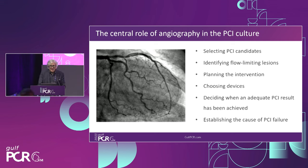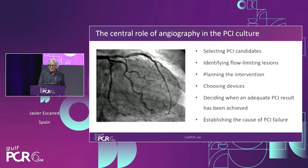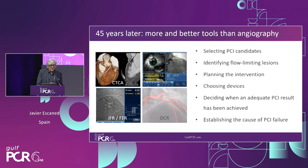To start with, it's important to remember that angiography still plays the same key central role that it played at the time of Andreas Grunzig performing PCI. We use it to select PCI candidates, identify flow-limiting lesions, plan the intervention, choose the devices, decide when we have achieved a good result, and to establish the cause of PCI failure. It's interesting — why do we stick so strongly to angiography, the only technique available to Andreas Grunzig, when we have so many other techniques available to us today?